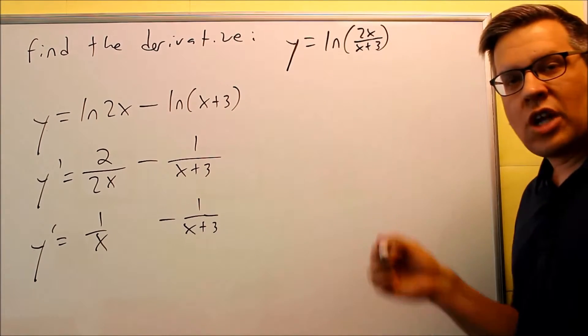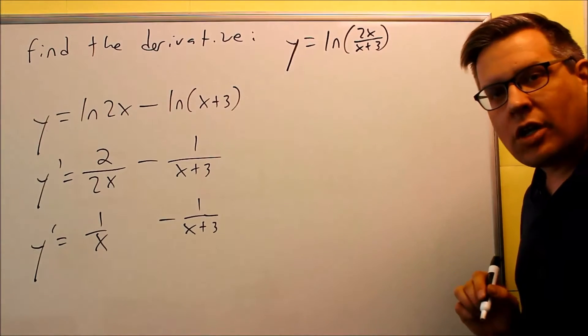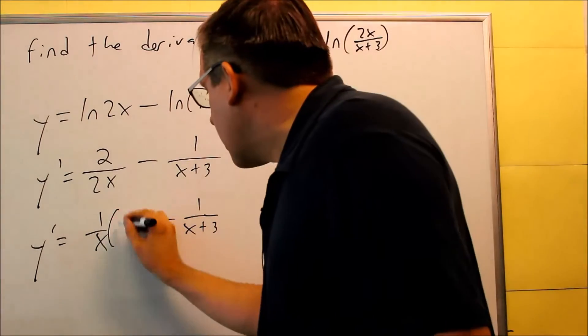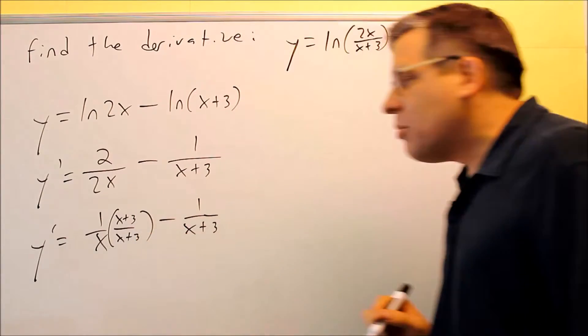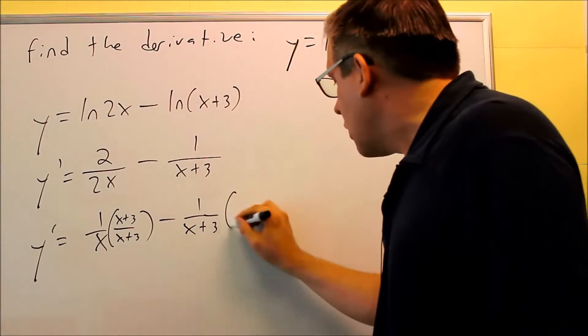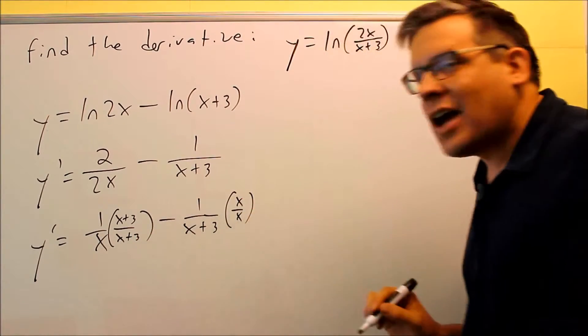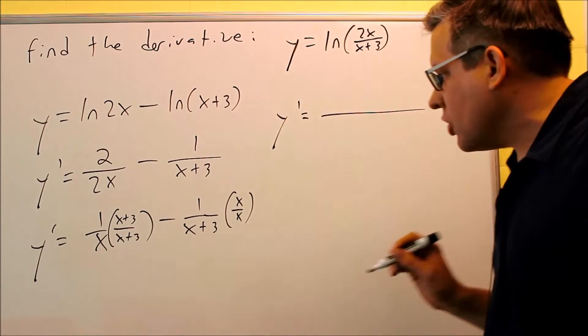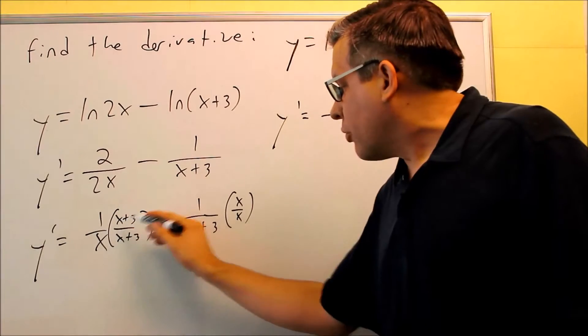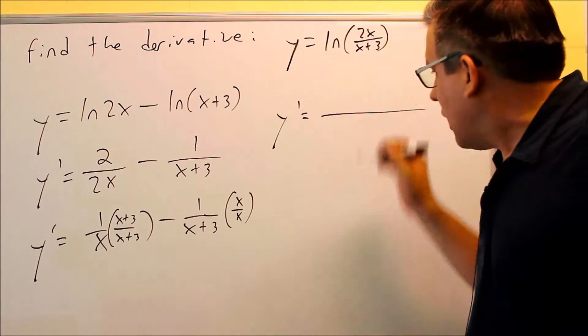You could leave your answer as two separate fractions, or if you'd like, you can get common denominators here. I'll get common denominators. We're going to multiply top and bottom here by x plus 3. Over here, you can multiply it by x. And then when we put that all together, you're going to get x plus 3 minus x. The x's are going to cancel.